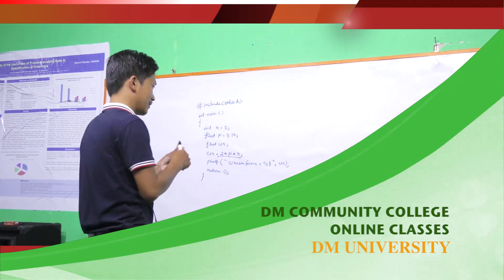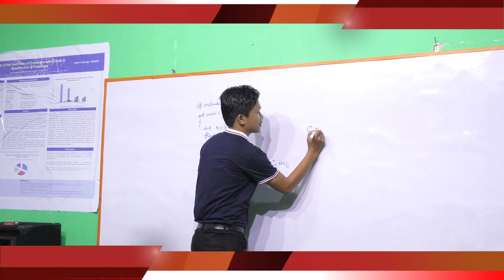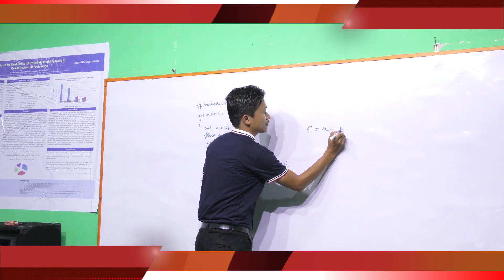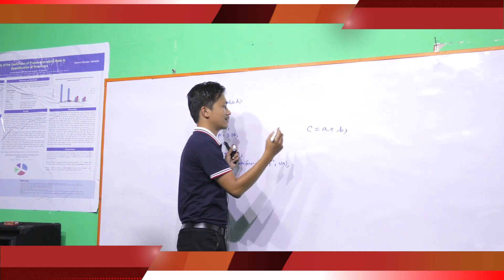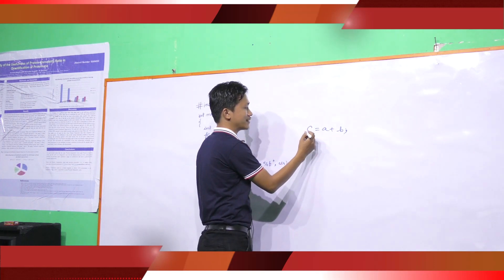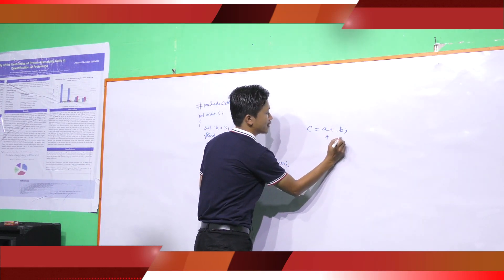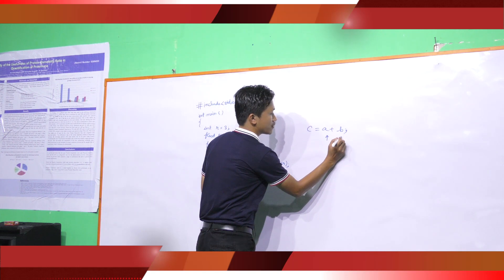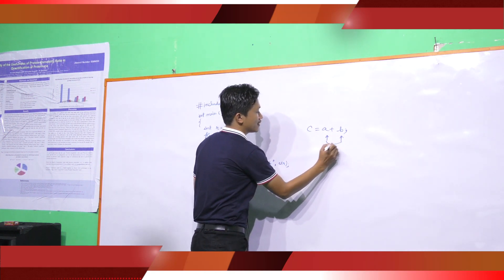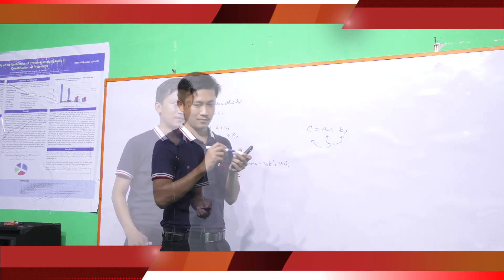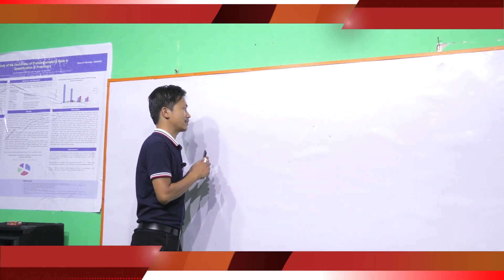For example, this statement tells the compiler that first we have to add the value which is stored in A and B, then assign the result to C. Next, we will go to different types of operators in C.